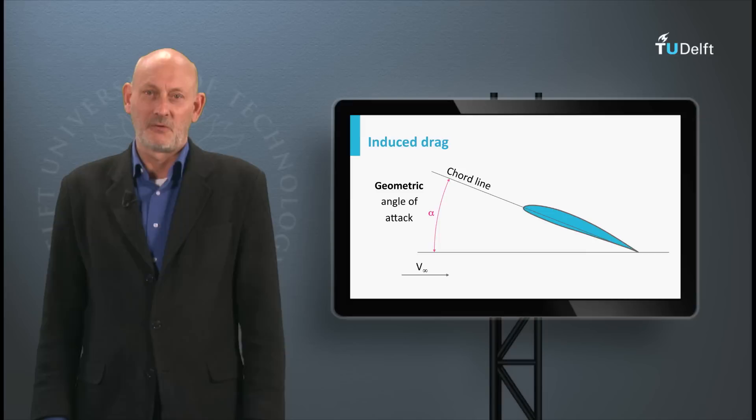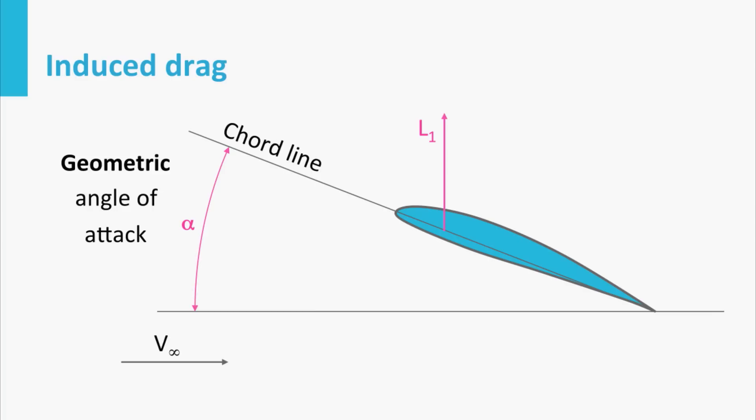Now imagine we have a wing with the chord line having a geometric angle alpha towards the incoming free stream flow. The lift force, due to this angle of attack, is L1. And by definition it is perpendicular to the free stream velocity vector, so straight up. This would be the situation if the wing would be infinitely long.